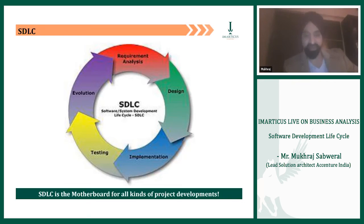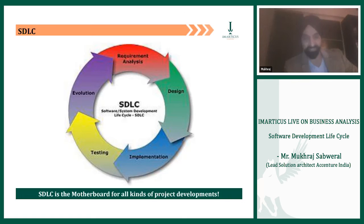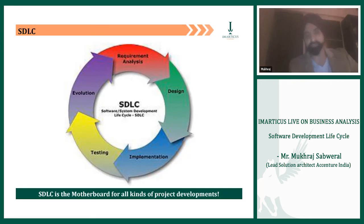Evolution kicks off another round of project cycle where new requirements come in — for example, crashing the paint time from five hours to three hours. Rajesh is again solicited, has discussions with stakeholders, and new requirements come in. The robo arm must do a diligent paint job in a lesser period of time. This is the larger software development or system development life cycle, which goes on and on until we evolve the product to the highest level of competitiveness.